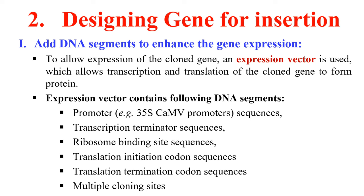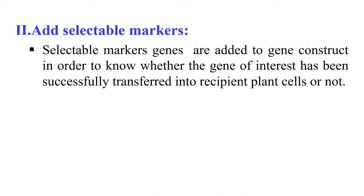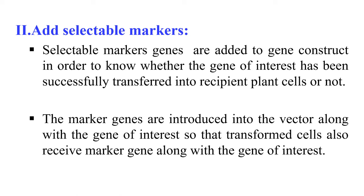The second part of gene construct design is adding selectable marker genes. We add these because after introducing our gene into the cells, we need to select whether the cells have received our gene of interest or not. These selectable marker genes are introduced into the vector along with the gene of interest. When the cells receive our gene, they also receive these marker genes, which give us a way to select out the transformed cells. Generally we use genes that provide resistance against some chemical, and the transformed cells should be capable of growing under that particular chemical.